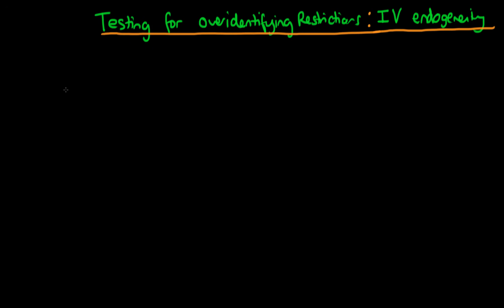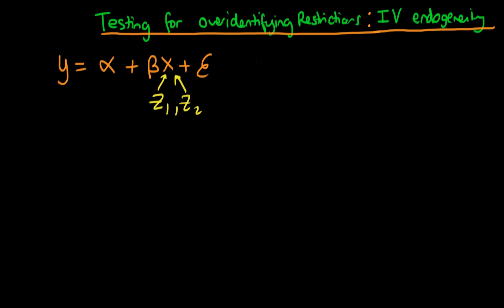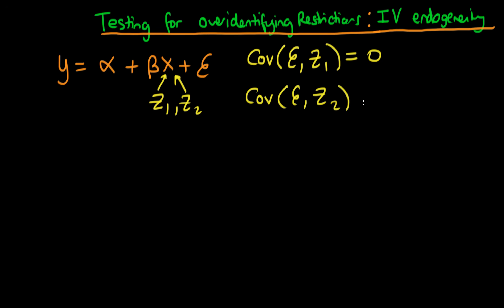In this video I want to talk about how we go about testing for over-identifying restrictions, which is another way of saying how do we test whether or not an IV is good. The idea is that we have a structural equation y = alpha + beta*x + epsilon, and suppose we have two potential instruments z1 and z2 for x. Apart from being correlated with x, we would like both instruments to satisfy the condition that the covariance of epsilon with z1 equals zero and the covariance of epsilon with z2 equals zero.